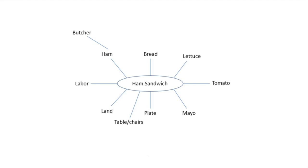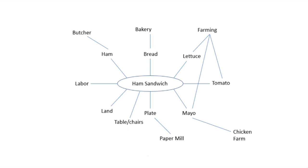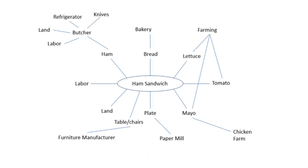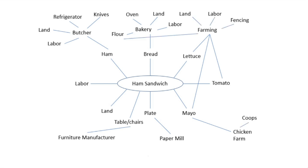The ham comes from the butcher, bread from the bakery, lettuce and tomato from farming, mayonnaise involves eggs from a chicken farm, a paper plate from a paper mill, tables and chairs from a furniture manufacturer. There's no further extension beyond land and labor because those are the originary factors of production. At the butcher you have a laborer, land, and capital goods like a refrigerator and knives. At the bakery: land, labor, an oven, and flour. The structure of production even for a ham sandwich is incredibly complex.